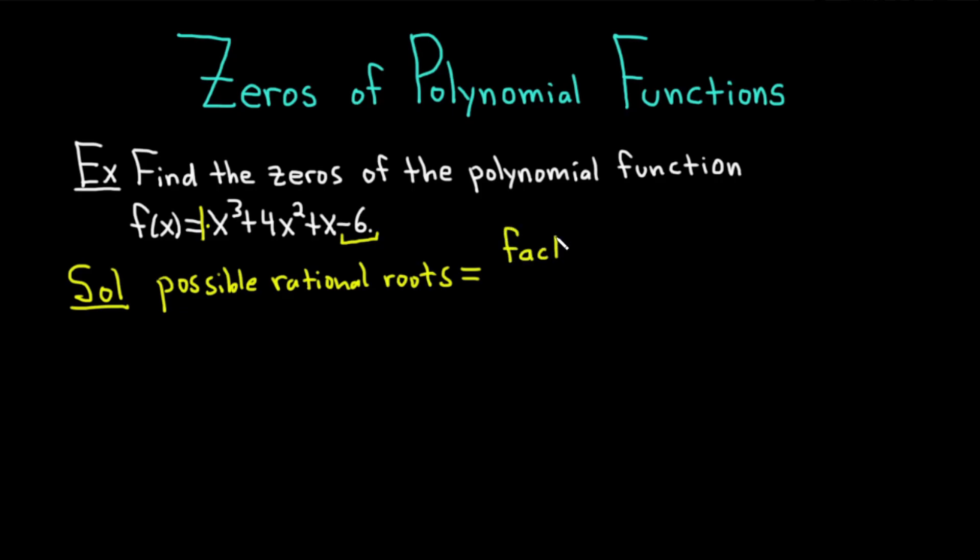It's always that. It's always factors of that last number over, and then you want the factors of the number in front of the x³. That's called the leading coefficient. So factors of 1. This is going to give you all the possible rational roots.